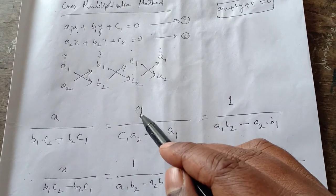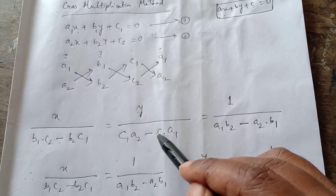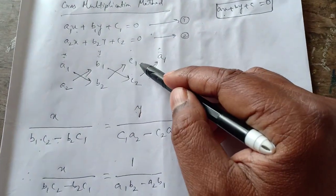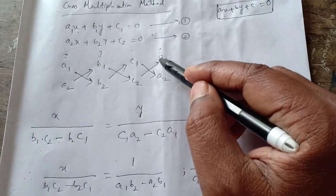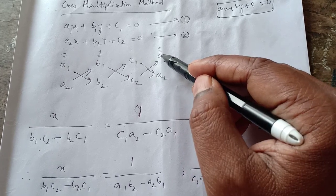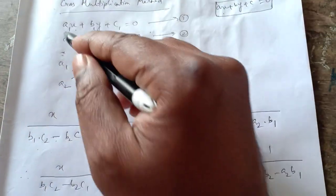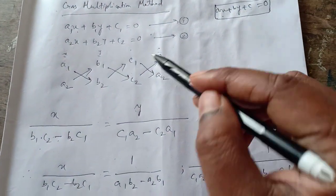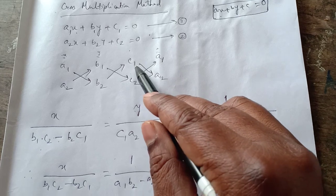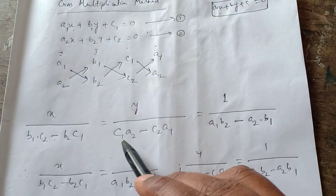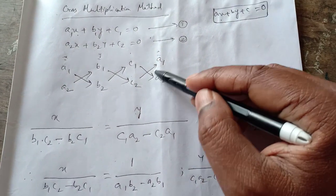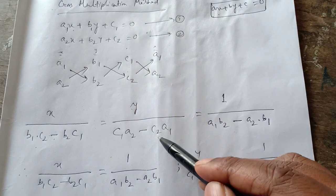Similarly, below Y we shall not write the coefficients of Y. We shall cross multiply the constants and the coefficients of X. So we multiply in this way: C1 into A2, minus C2 into A1.